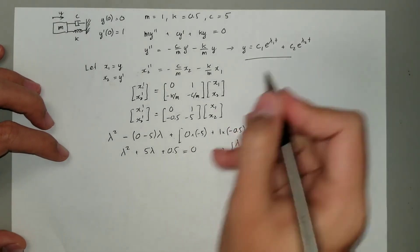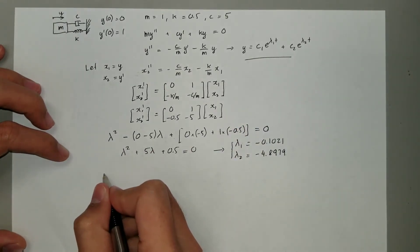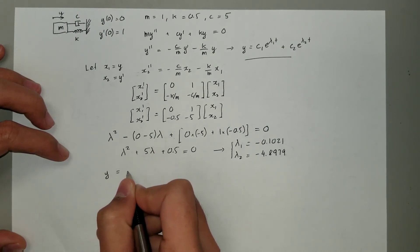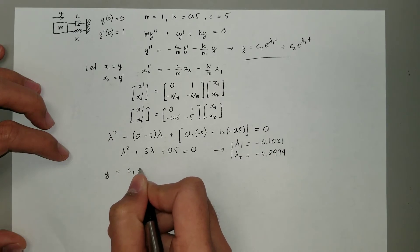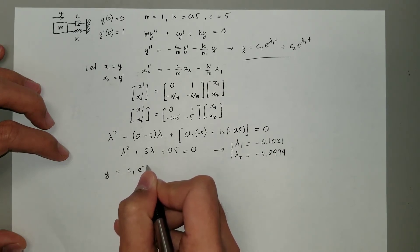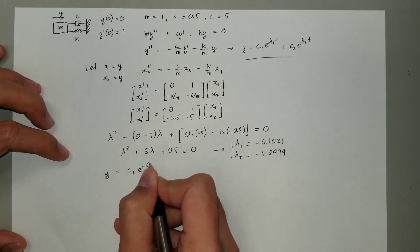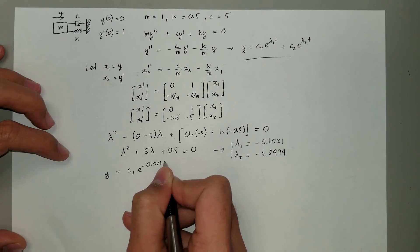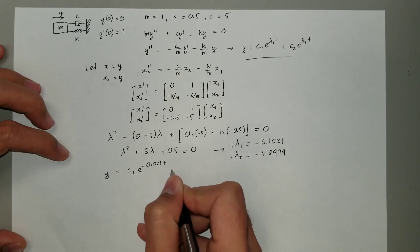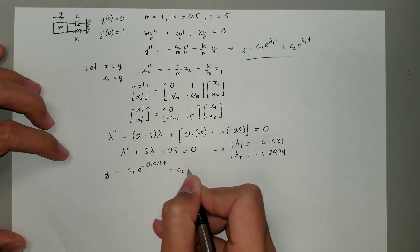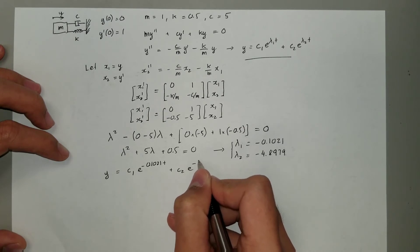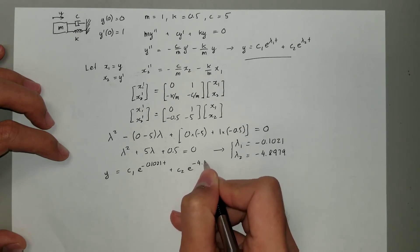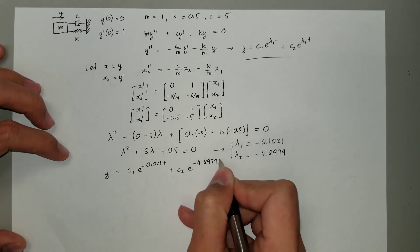Returning to our general solution, we now have y equals c1 times e to the -0.1021t plus c2 times e to the -4.8979t.